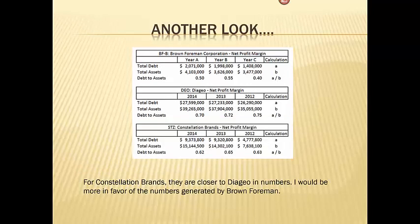Finally, we have Constellation Brands. Constellation Brands is right in the middle between the other two companies. It's maybe not a terrible thing, but it causes me to pause. Right now, just based on this, I would favor Brown Foreman over any of the others as far as their debt to assets ratio.